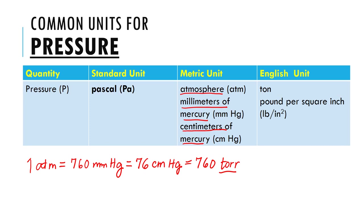Torr is short for Torricelli, named after Evangelista Torricelli. One atmosphere is also equal to 101,325 Pascal, or 101.3 kiloPascal. These are the common units you can use for solving problems relating to the gas laws.